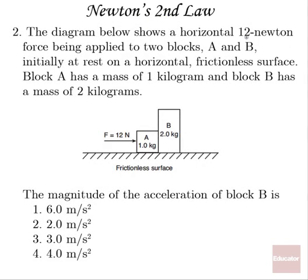Number two: the diagram shows a horizontal 12 newton force being applied to two blocks A and B, initially at rest on a horizontal frictionless surface. Block A has a mass of one kilogram, and block B has a mass of two kilograms. Find the magnitude of the acceleration of block B. Well, the way I would do this, as I look at this...